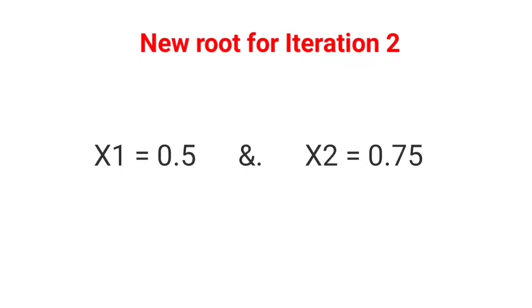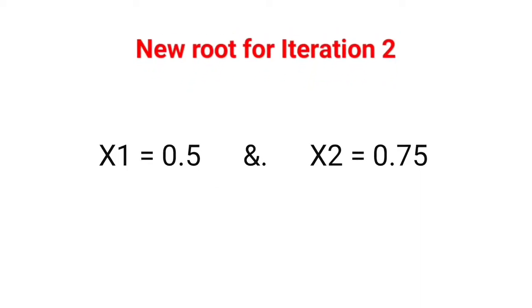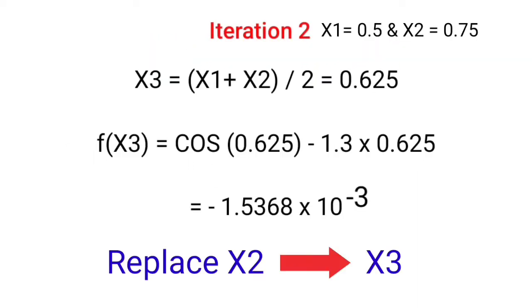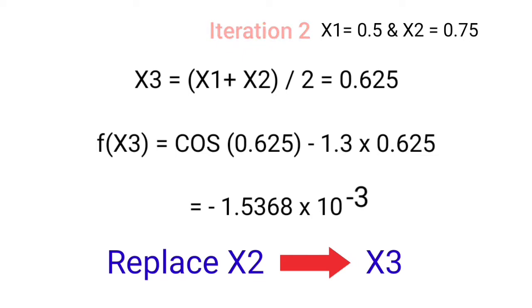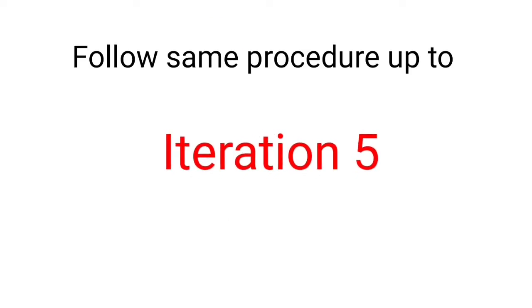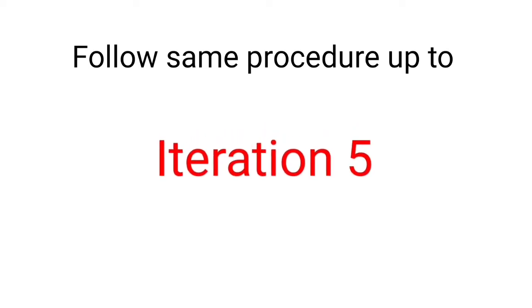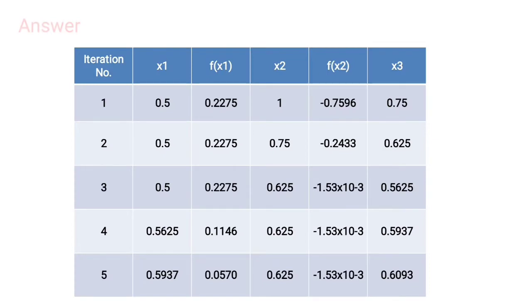Now the new roots are x1 equal to 0.5 and x2 equal to 0.75. For the second iteration, find x3 equal to (x1 plus x2) divided by 2 using the bisection formula, then find f(x3), check the sign, and replace accordingly. Follow the same procedure through iteration 5. Tabulating all 5 iterations, at iteration 5 we get x3 equal to 0.6093, which is the required root of the equation.